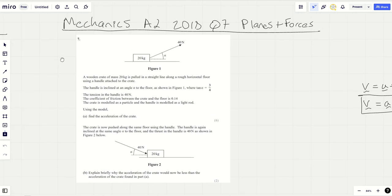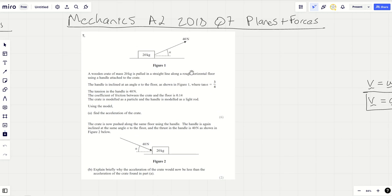Hello and welcome to a video on the mechanics papers, 2018 question 7. I've put this under my category of planes and forces. I've got five categories because every single mechanics paper has five questions and they always basically have five categories: wonky moments,